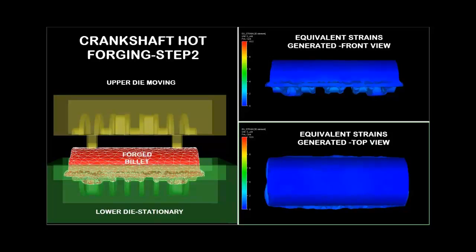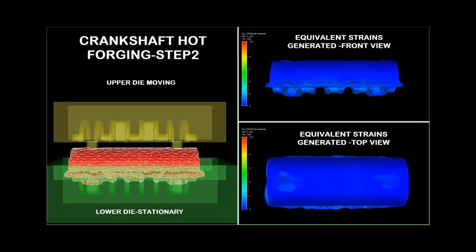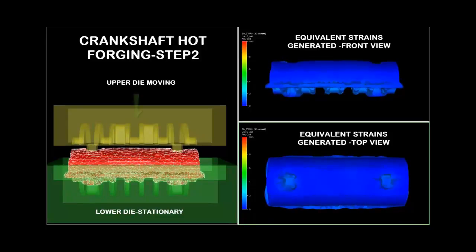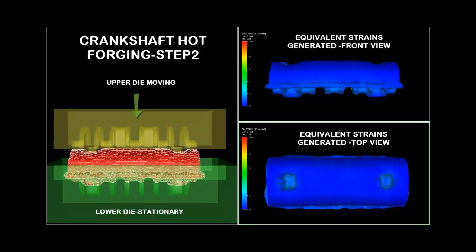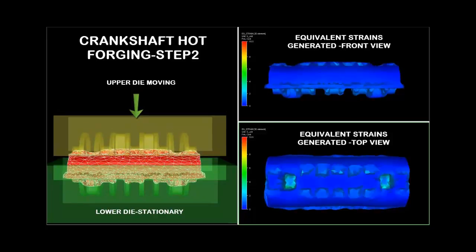On the left hand side, one can see step 2 of crankshaft hot forging. One can visualize the changes in the microstructure in the crankshaft by seeing changes in the mesh.